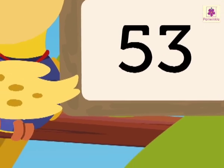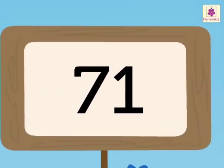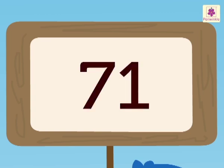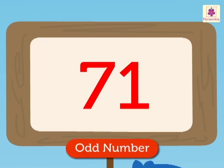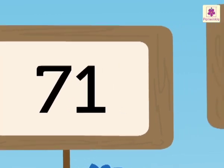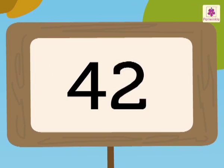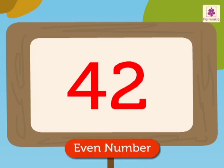Next is the number 71. Here, the number 1 is in the 1's place. So, 71 is an odd number. Now, we have the number 42. Here, 2 is in the 1's place. So, 42 is an odd number.